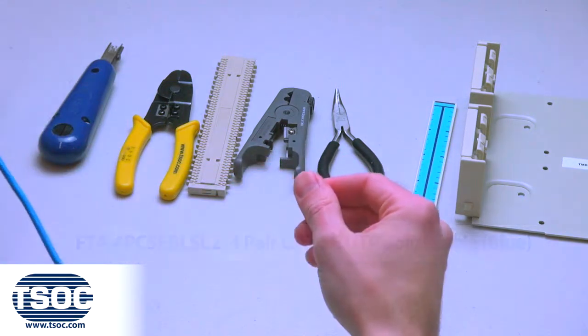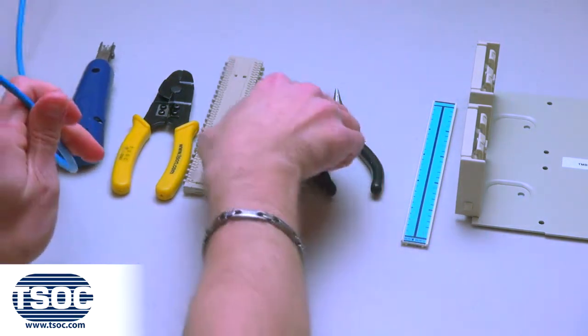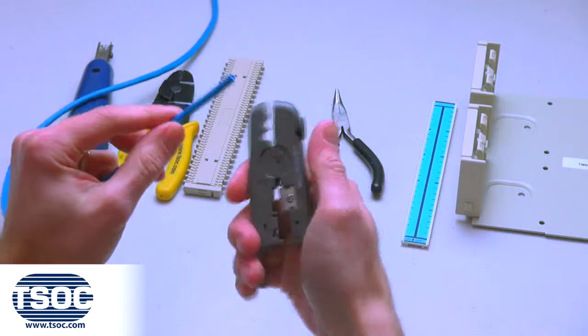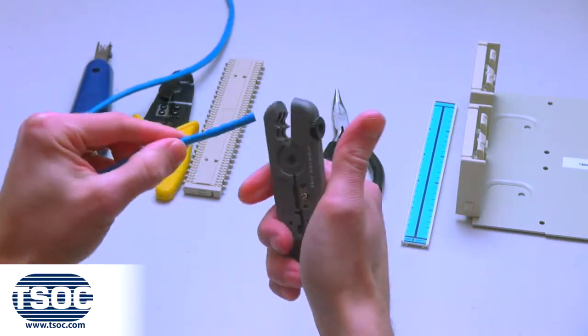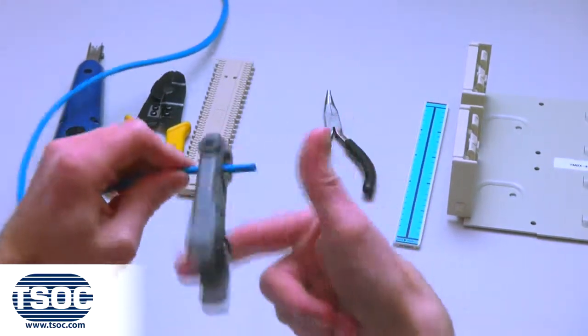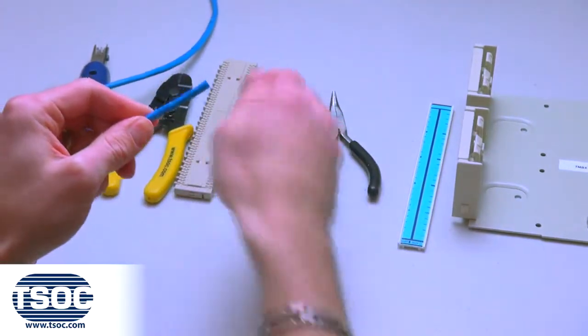Step 1: Cut the specified length of 4-Pair CAT 5E UTP Solid Cable and insert into the cable prep tool. Rotate in one direction one to two turns.